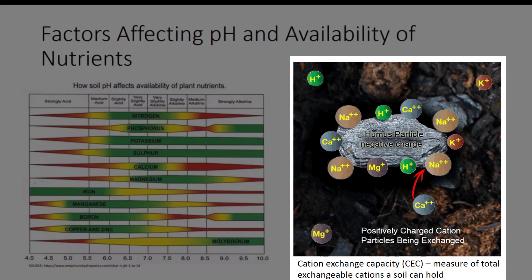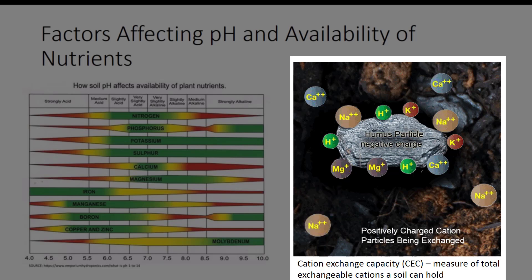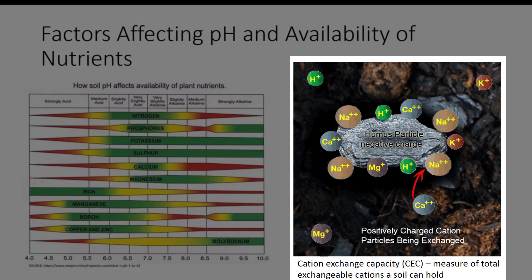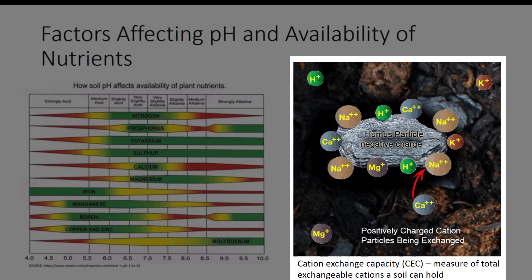Cation exchange capacity is the measure of total exchangeable cations a soil can hold. The CEC of a soil is used as an index of soil fertility. Many essential elements carry positively charged ions called cations. They include potassium, calcium, magnesium, copper, iron, manganese, and zinc. When soils are highly fertile, they typically have large surface areas that can attract and hold nutrients. Soils that are rich in organic matter have a high CEC and thus can hold a large amount of cations.